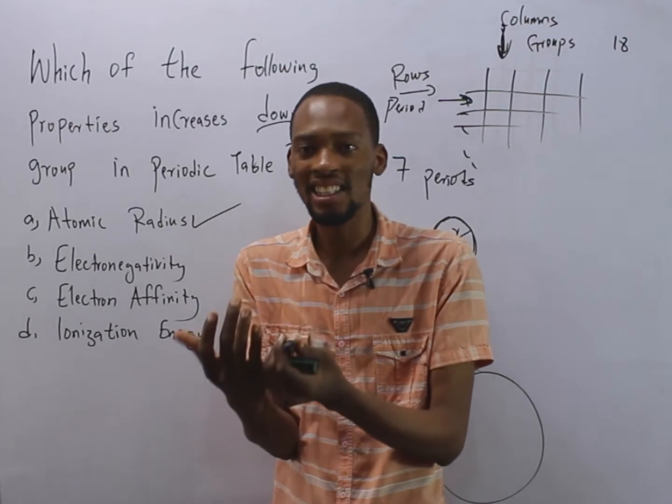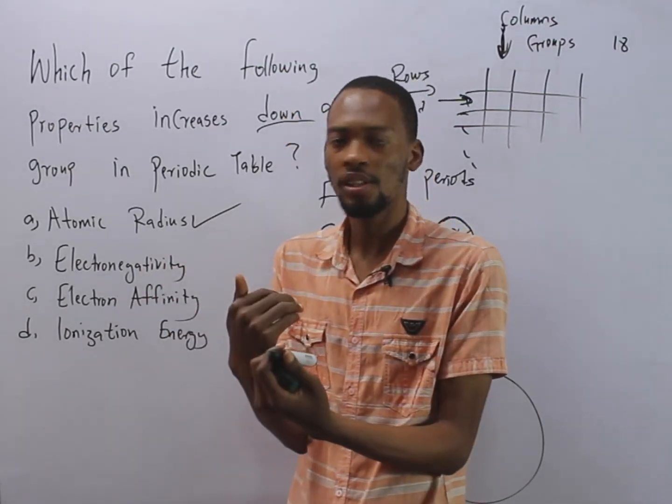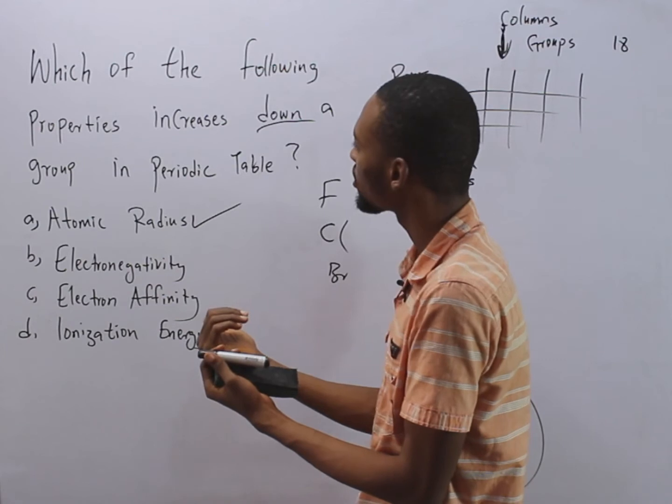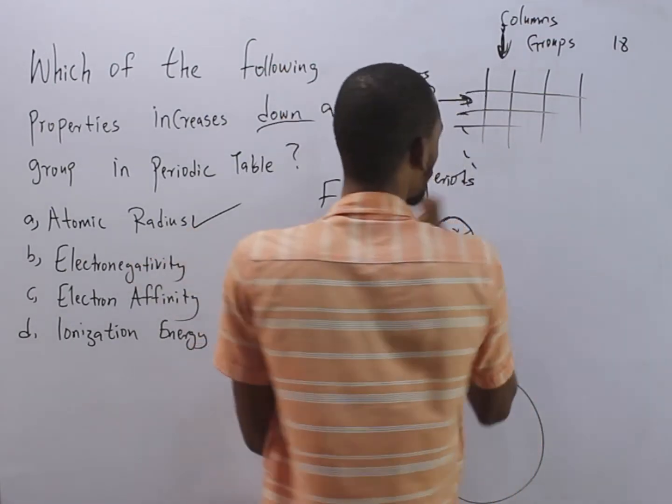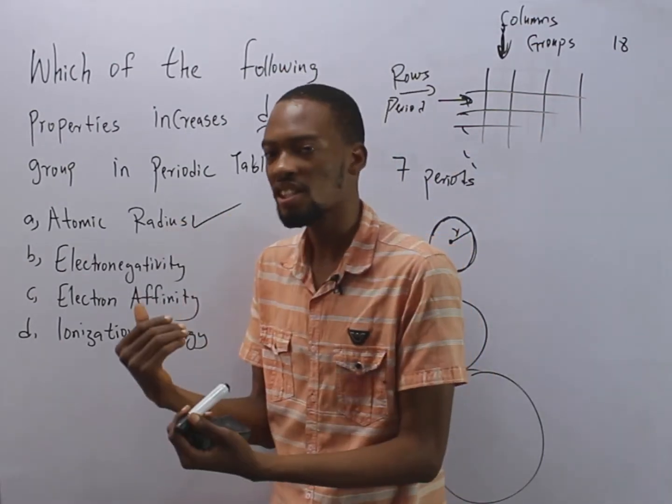On the other hand, when it comes to a period, across a period, atomic radius decreases. So as you go down this way, the radius of the atom decreases.